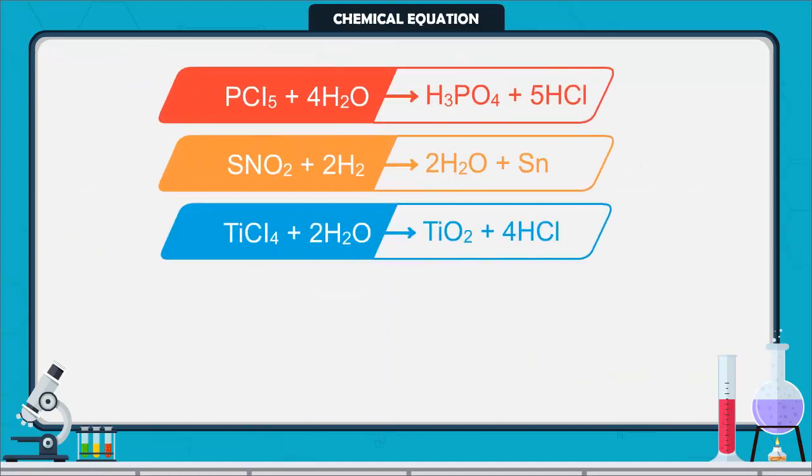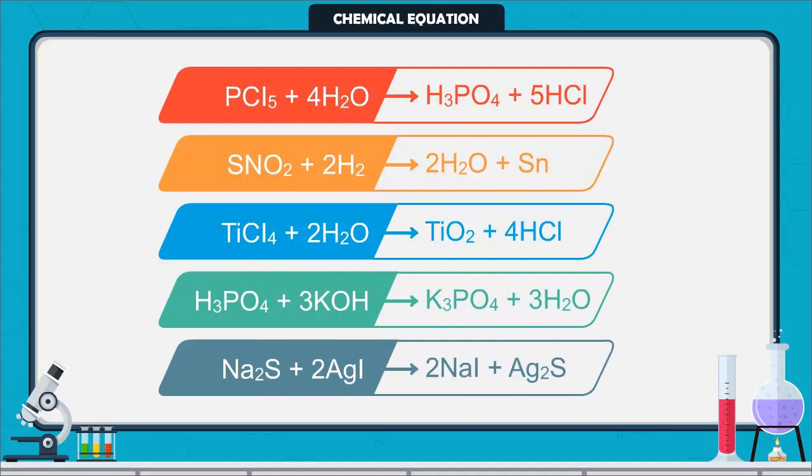A few examples of chemical equations are listed below. A chemical equation is a way to represent the chemical reaction in a concise and informative way.